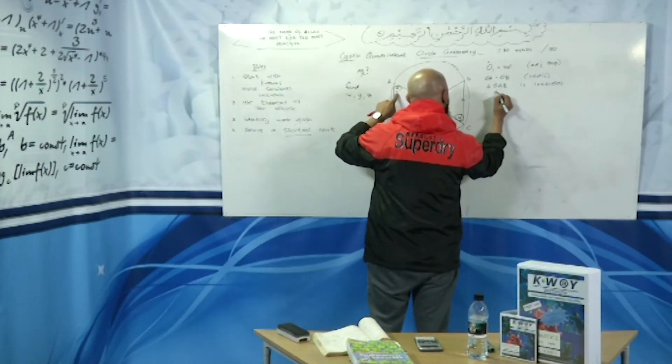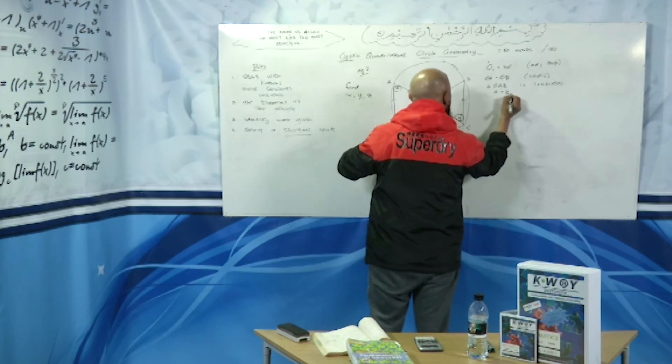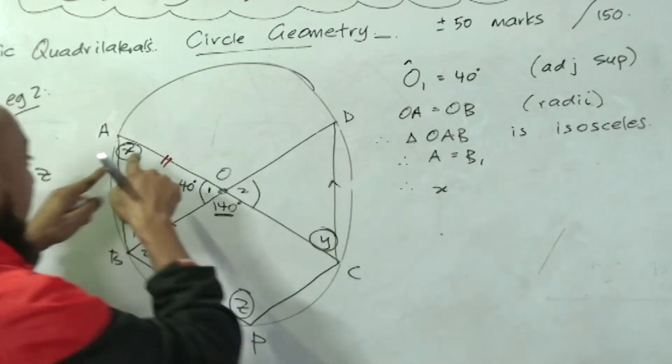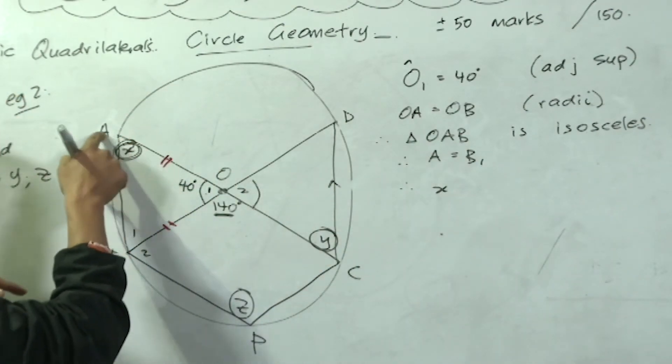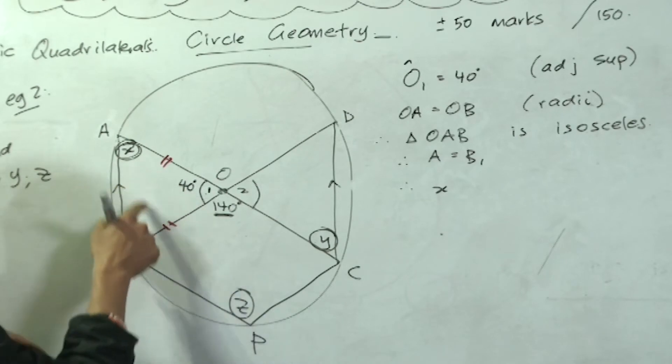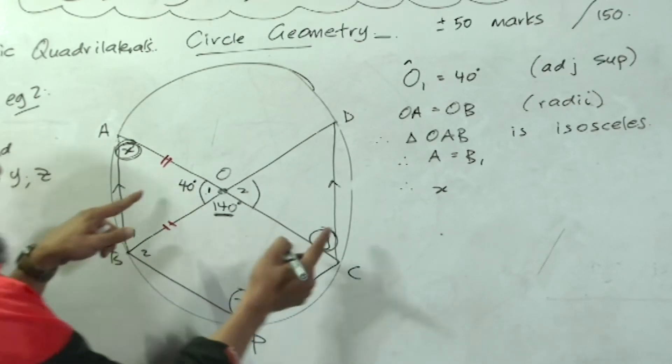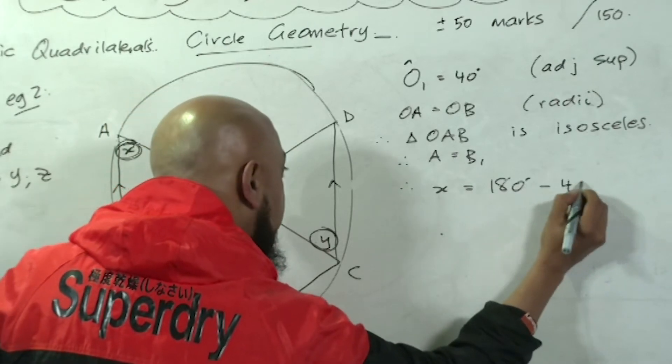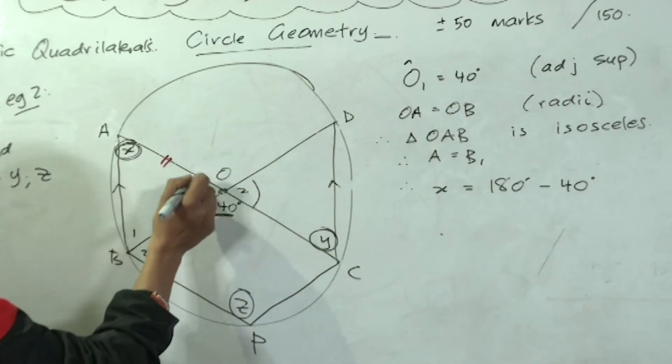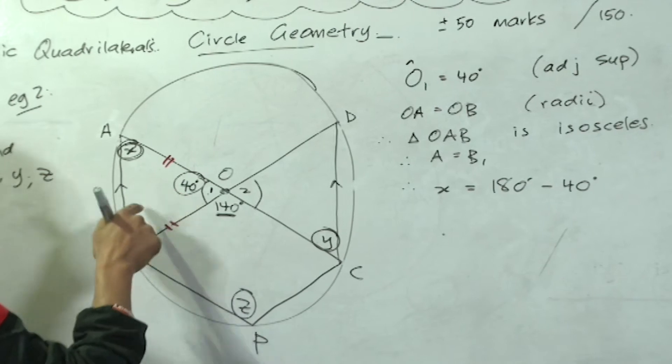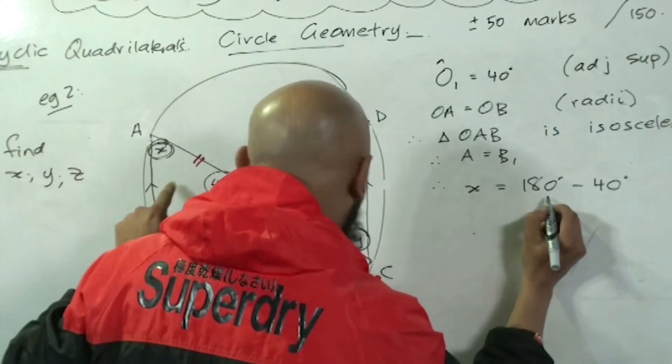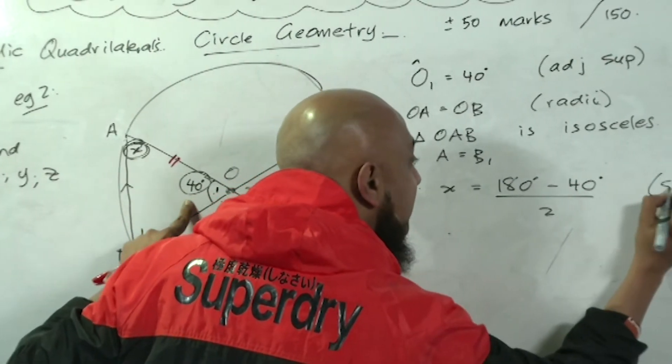Therefore, angle A is equal to angle B1 in an isosceles triangle. Therefore, x which is angle A is found using sum of angles of a triangle. It's equal to 180 degrees minus 40 minus that 40, divided by 2 because these two angles are equal.